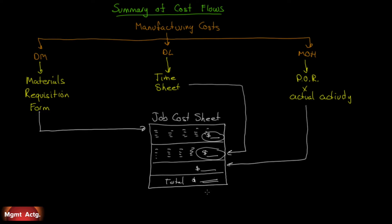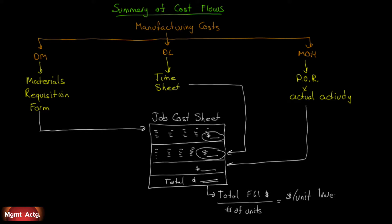Add it all up and we have a total for this job — we know exactly how much this job cost. That total cost gets transferred to finished goods inventory. We can then divide that number by the number of units this job produced, and that gives us our dollar cost per unit for inventory. We may transfer a thousand units to finished goods and then sell 300 of them — we need a per-unit inventory cost for that.